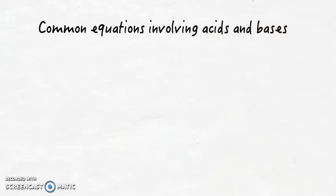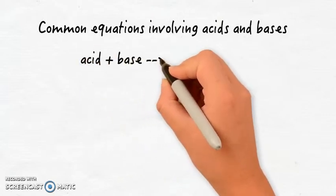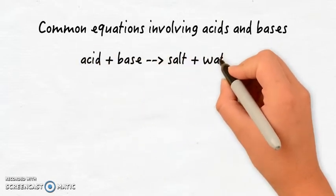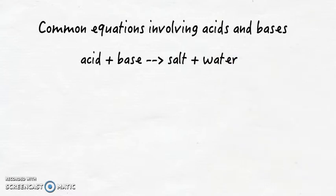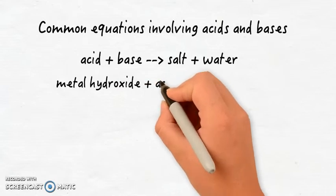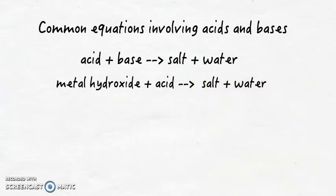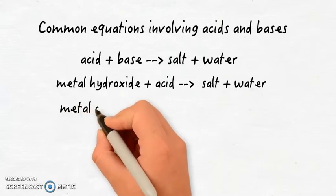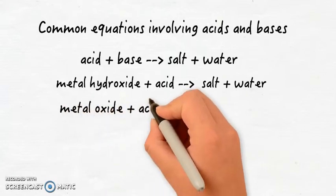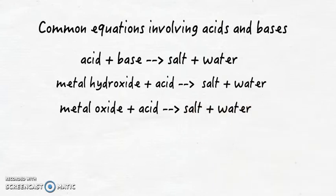Some common equations involving acids and bases include the following. If you put an acid and a base together, this is your neutralization reaction—you'll end up with salt and water. If you have a metal hydroxide and an acid, you will end up with salt and water. If you have a metal oxide and acid, you will end up with salt and water as well.